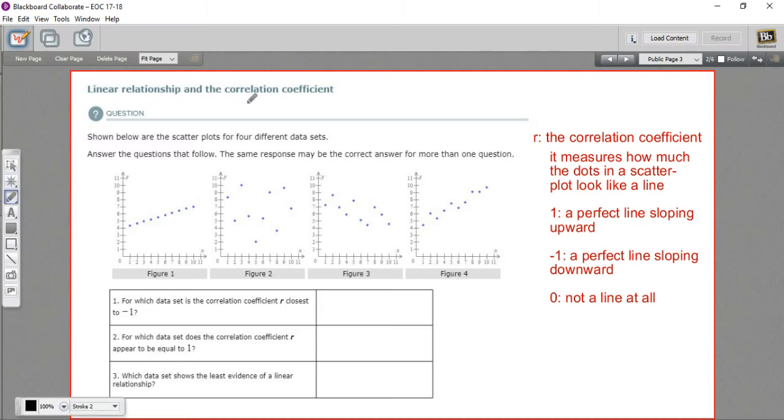In this problem, we are looking at scatter plots and something called the correlation coefficient. The correlation coefficient is this number that statisticians represent with the letter r. The correlation coefficient shows how much a group of dots looks like a line.